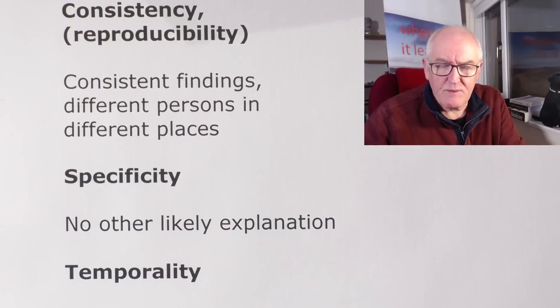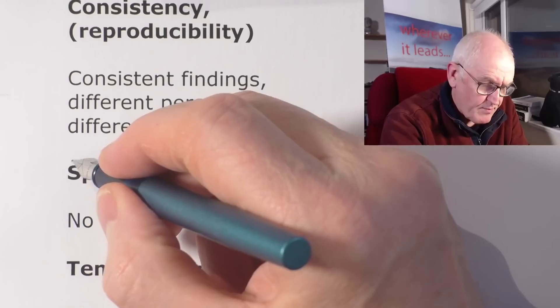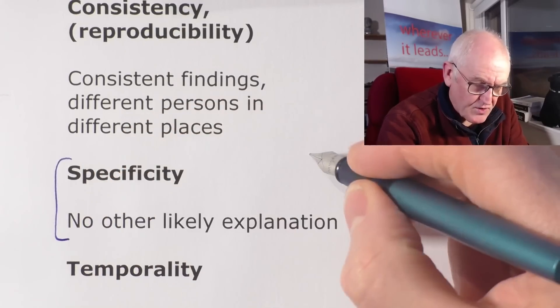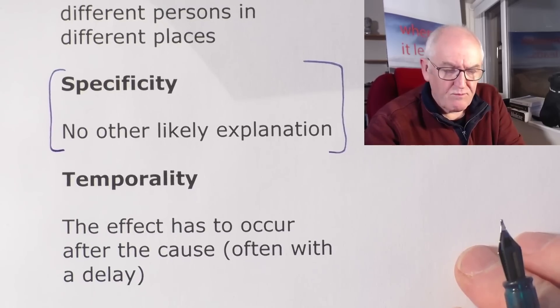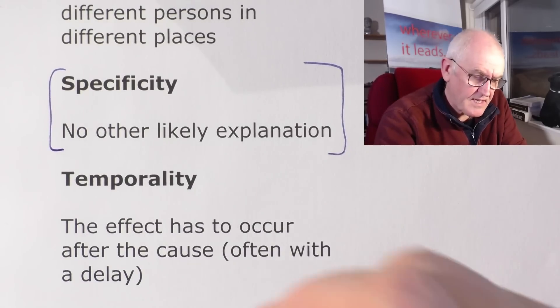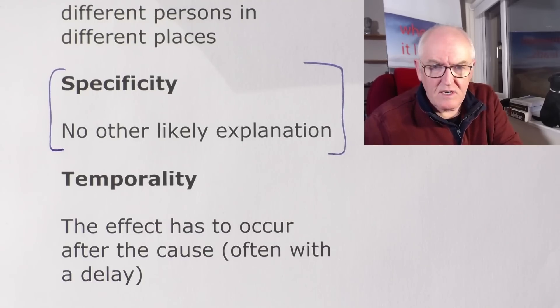Specificity: no other likely explanation. This one is a bit clouded — there are possibly a range of explanations for the excess deaths, but it is possible to isolate out factors. Another Bradford Hill criterion is temporality: the effect has to occur after the cause. So the excess deaths are the effect, and the cause has to be something that already occurred before the excess deaths — and again, that indicates a causal relationship.